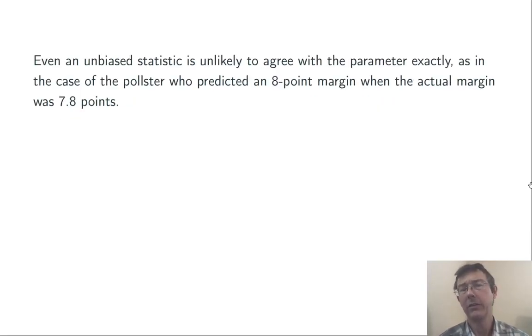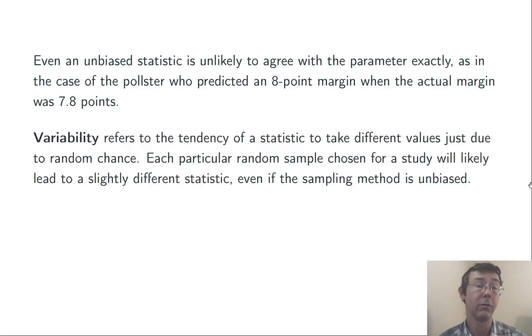Even an unbiased statistic is unlikely to agree with its parameter exactly. And the poll is a good example. The pollster predicted an 8 point margin, but the actual margin ended up being 7.8 points. So, variability refers to the tendency of a statistic to take different values just due to random chance. So, as we said, every different random sample is likely to give you a different statistic. Even if the sampling method overall is unbiased.